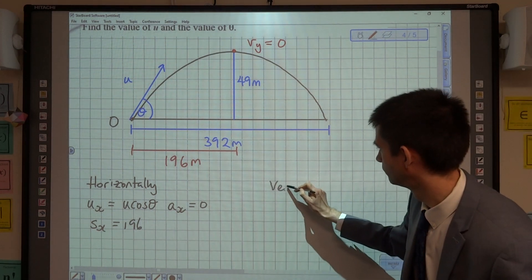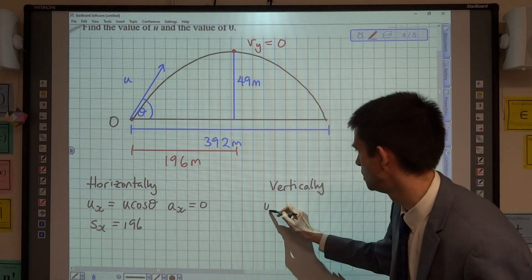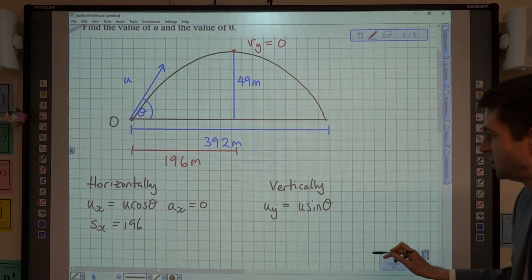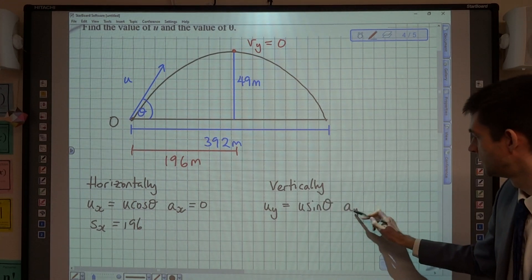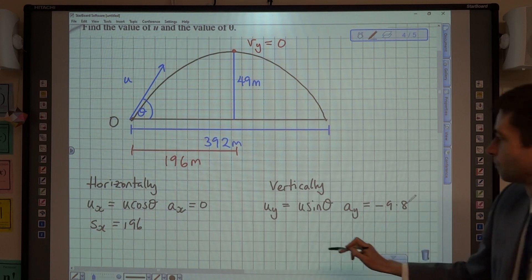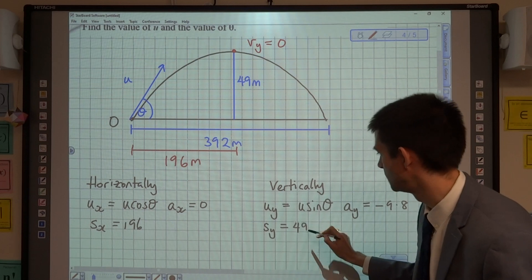Vertically, then. We know that the initial velocity vertically is u sin theta. We don't know u, we don't know theta. We know that the acceleration is negative 9.8, because it's due to gravity. We know that the displacement is 49 metres.